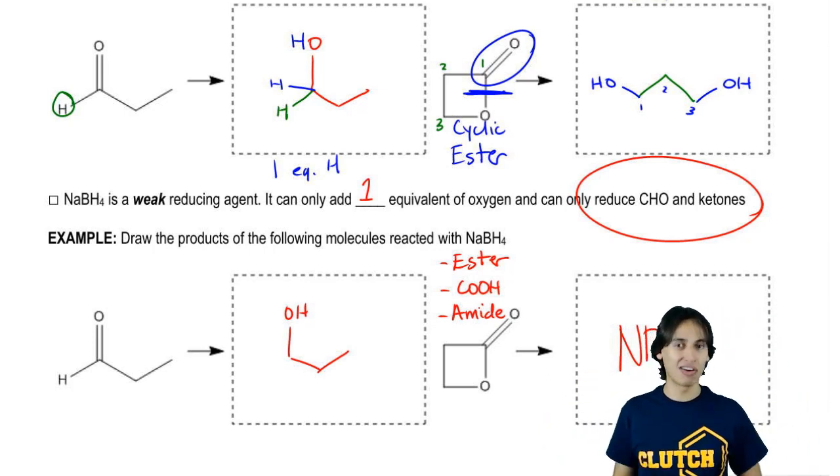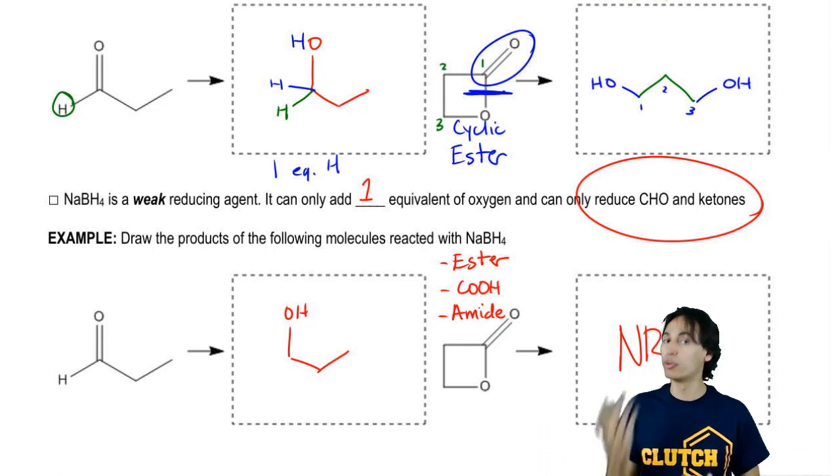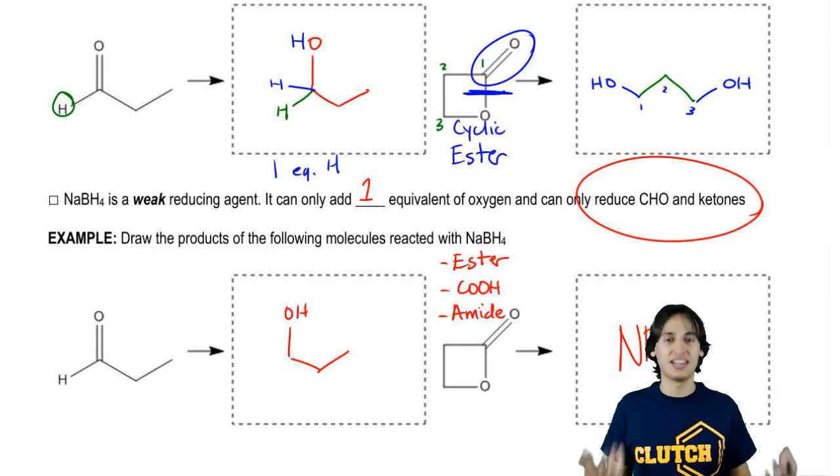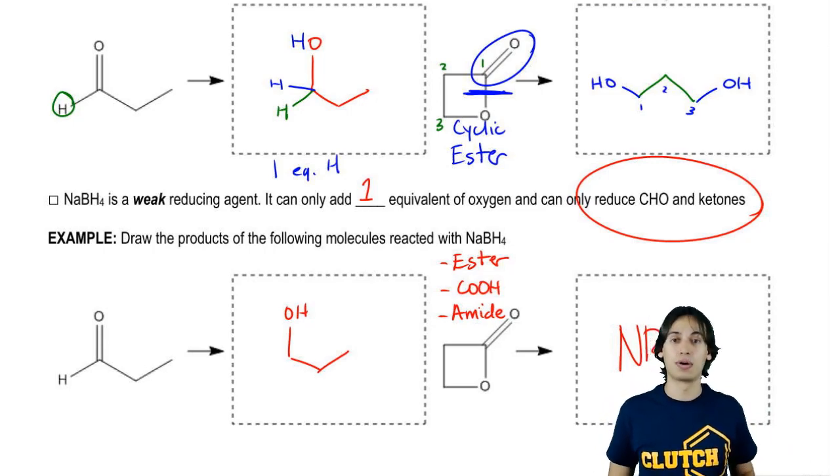Overall, reduction isn't that hard. You don't even really need to know the mechanism most of the time. You just need to predict the products and tell what NaBH4 will react with and what it won't. Remember that LAH pretty much reacts with anything. So let's go ahead and do some practice problems.